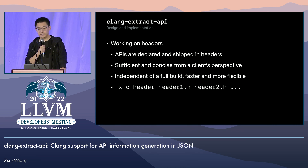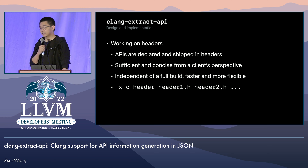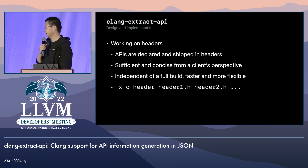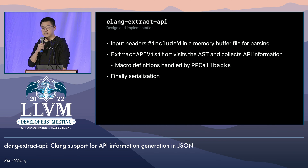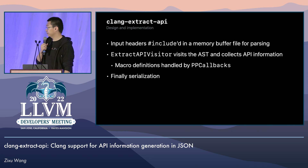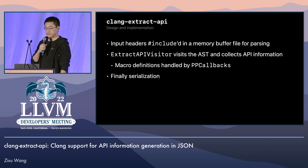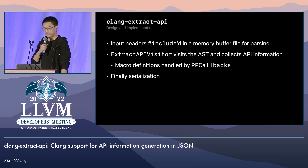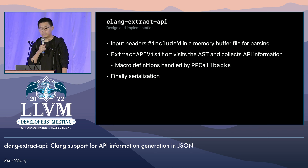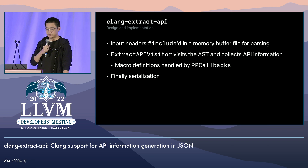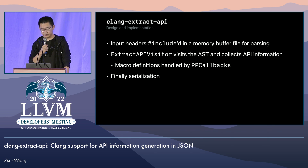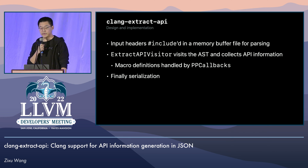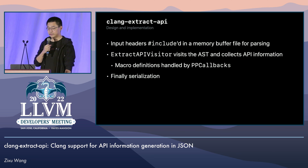To pass in the headers to clang-extract-API, you simply list out the headers in the command line with a dash-x specifying the language. From there, the headers all get included in an in-memory buffer file and parsed by Clang. Then, the extract-API AST consumer and visitor traverses the AST and collects information from the decl nodes. It also registers preprocessor callbacks to collect macro definitions, because those are also important APIs. And finally, the information is all fed into a serializer interface.